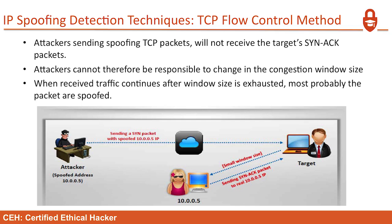IP spoofing detection — TCP flow control method: attackers sending spoofed TCP packets will not receive the target SYN-ACK packets. We send a SYN, but we won't get the SYN-ACK back. Attackers therefore cannot be responsive to changes in the congestion window size — that's a TCP/IP packet concept. When received traffic continues after a window size is exhausted, the packets are most probably spoofed. That's another way to detect it — it's really detailed stuff.